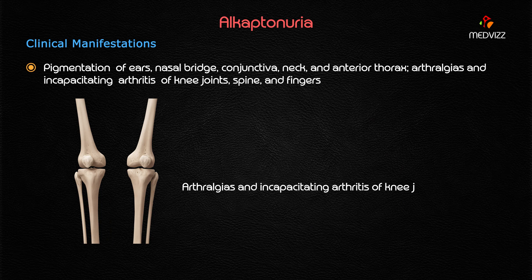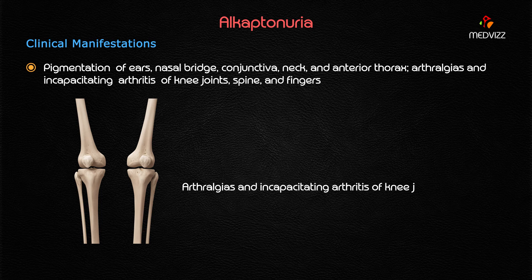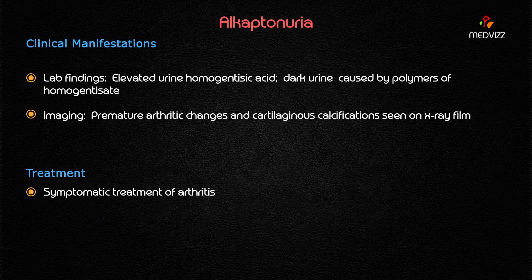The clinical manifestations of alkaptonuria include increased pigmentation of the ears, nasal bridge, conjunctiva, neck, and anterior thorax — these areas are very important to identify on an exam. Patients also present with arthralgias and incapacitating arthritis, typically involving the knee joints, spine, and fingers.